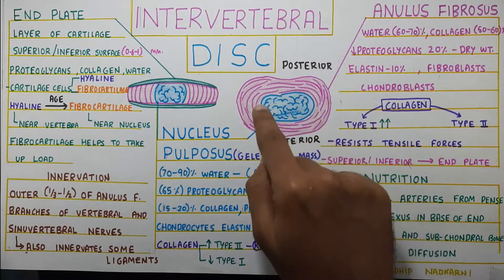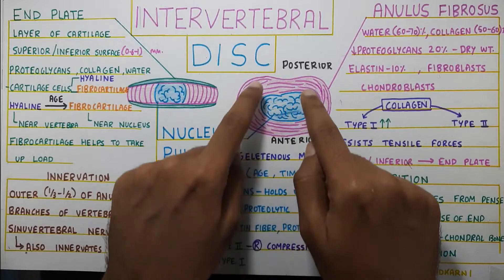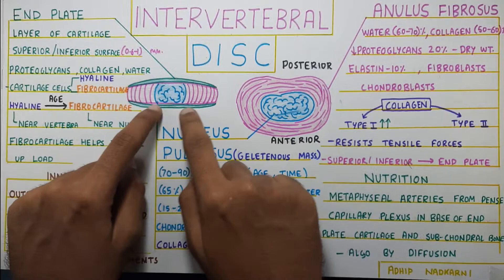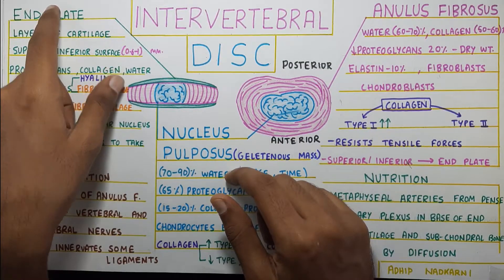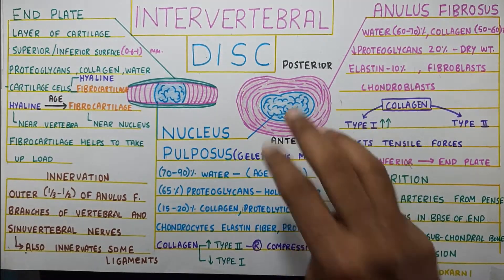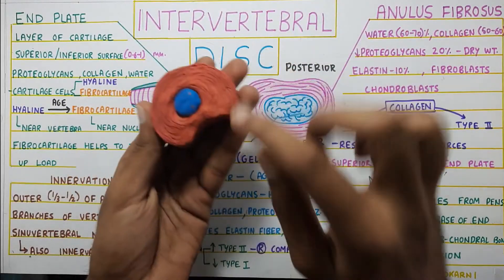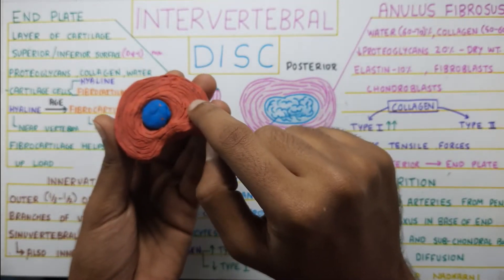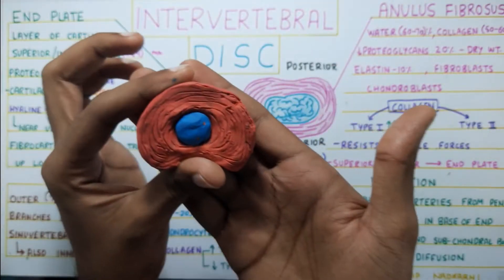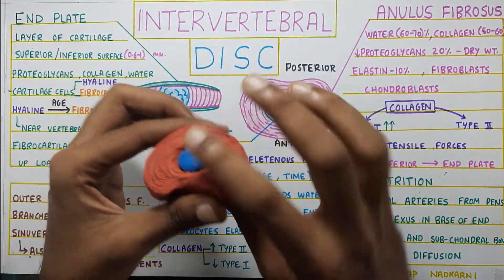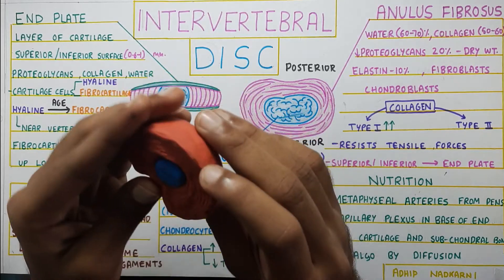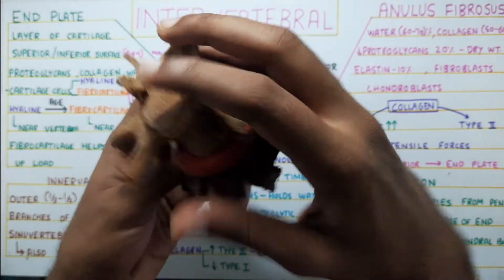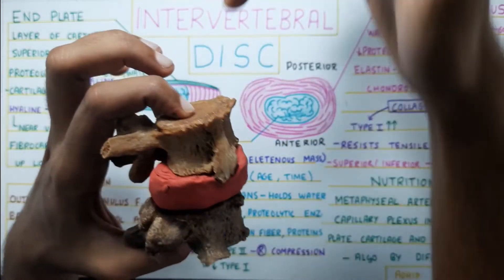First we will start with the nucleus pulposus, then move on to the outer part called the annulus fibrosus. At the top and bottom there is a covering called the end plate. These are the three components of the disc. The nucleus pulposus is in the center, surrounded by the annulus fibrosus, and the end plates are on top and bottom. This is how the disc is sandwiched between the two vertebras and helps in shock absorption.